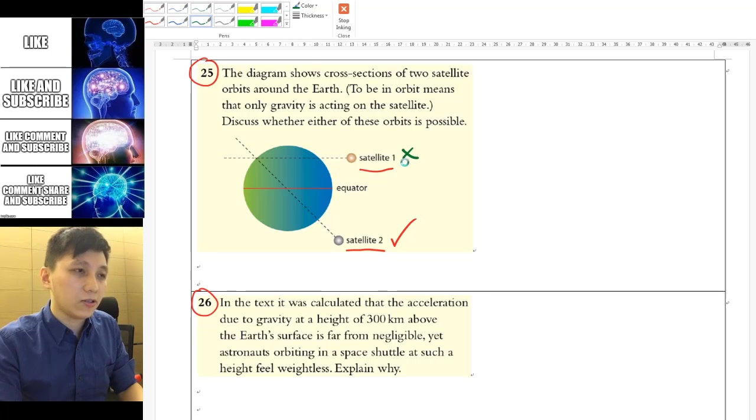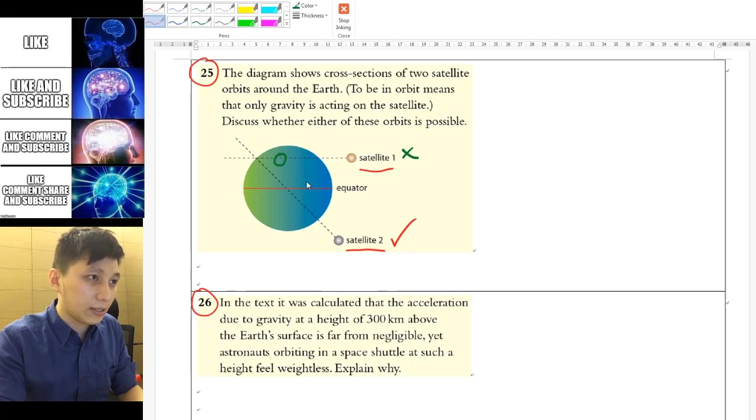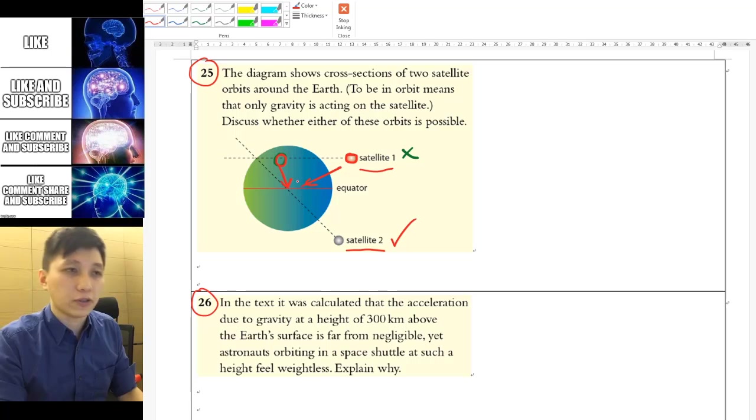However, for satellite 1, it is not possible because thinking about, for example, the satellite is at this point versus at this point, the force is not even in the same direction and it is not towards the center of the circle. And therefore, it is not possible.